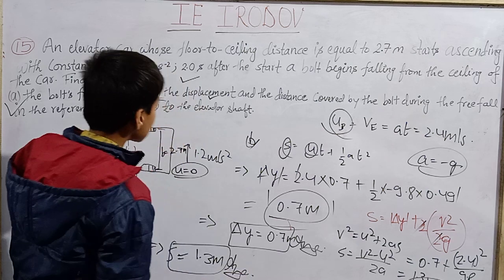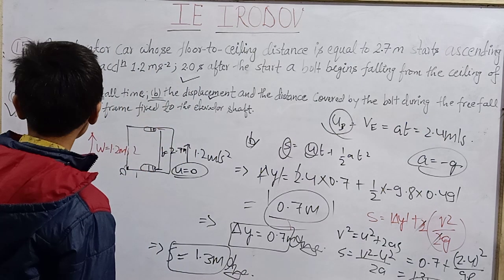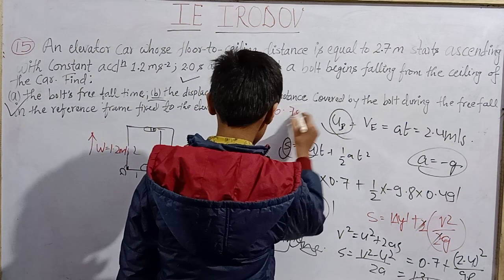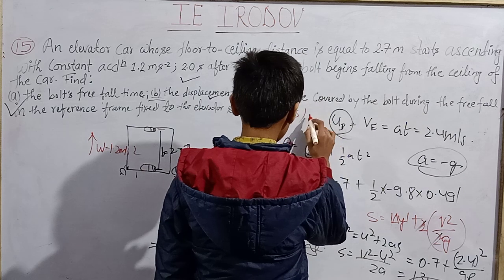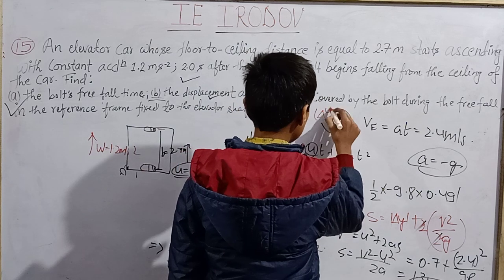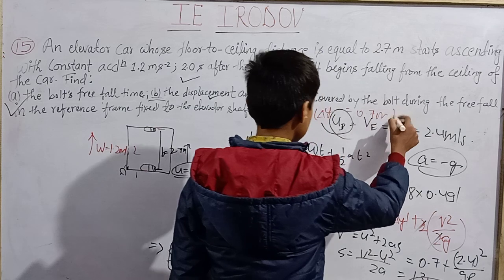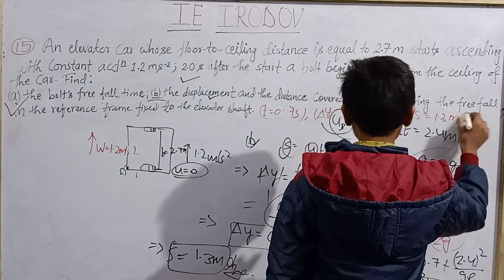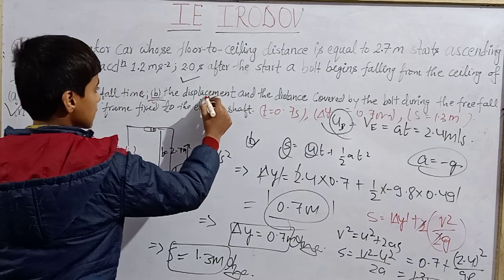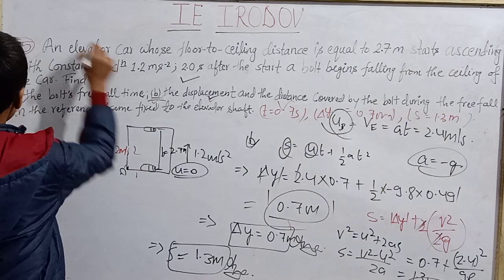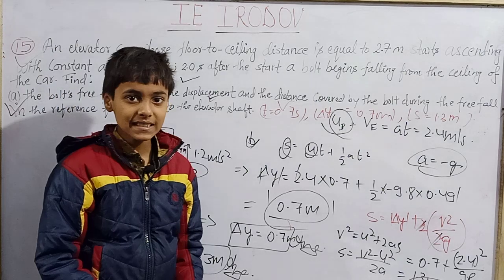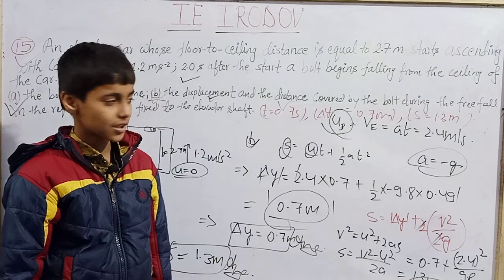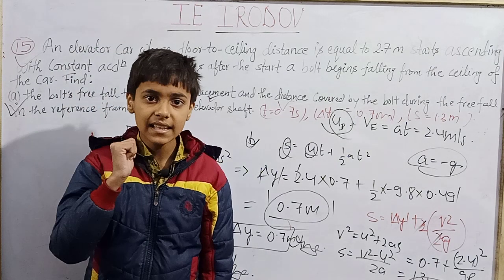So to summarize our three answers: the free fall time is 0.7 seconds, the displacement of the bolt is 0.7 meters, and the distance covered is 1.3 meters. That completes question number 15 — Part A and Part B. Hope to meet you in our next video. Thank you for watching. Jai Hind, Jai Bharat.